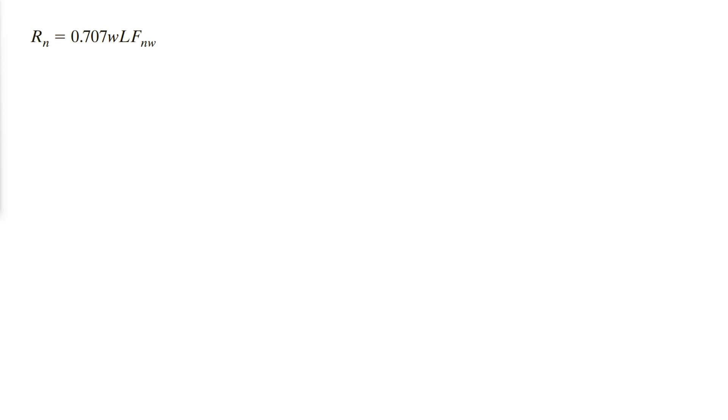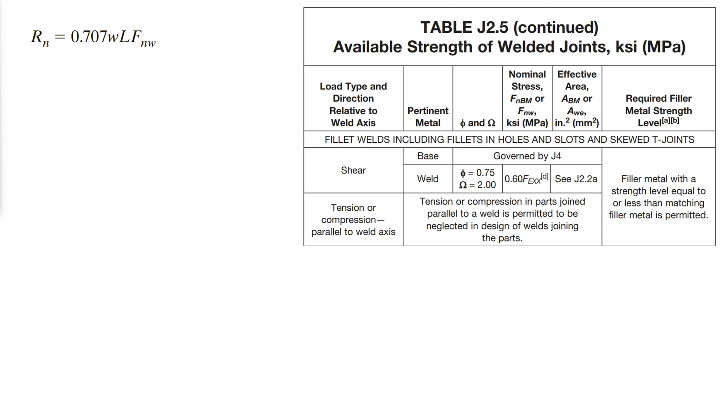The design strengths of welds are given in AISC table J2.5. The ultimate shearing stress FNW in a fillet weld is 0.6 times the tensile strength of the weld metal denoted FEXX.